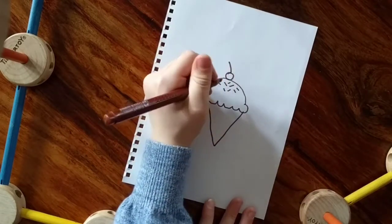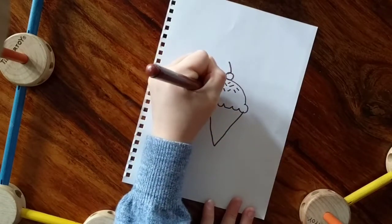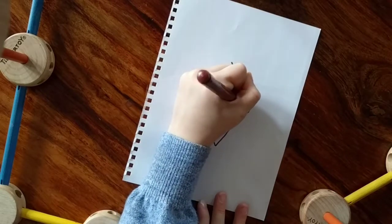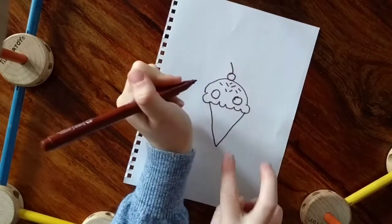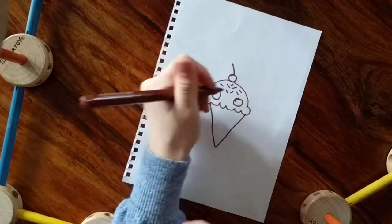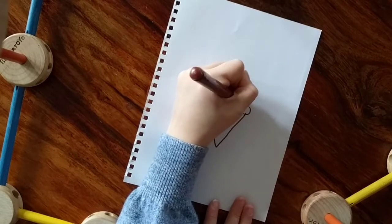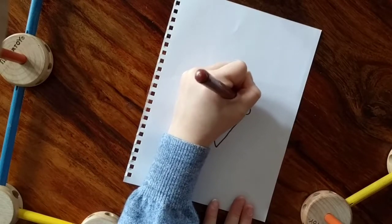And then what you're going to do after that is draw some eyes. So you're going to draw some big circles. Try to make them far apart from each other. And draw two little circles inside and color in the rest.